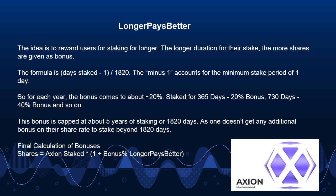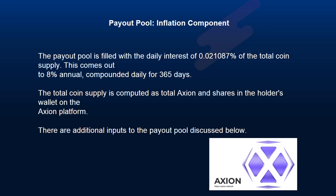One doesn't get any additional bonus on their share rate for staking beyond 1820 days. The final calculation of bonuses is: Shares = Axion staked × (1 + bonus percent longer pays better). Payout pool inflation component.